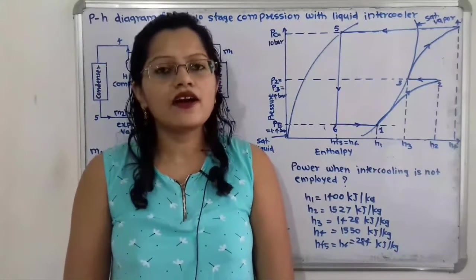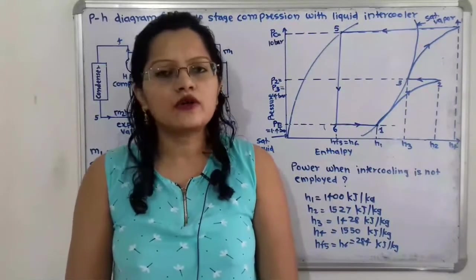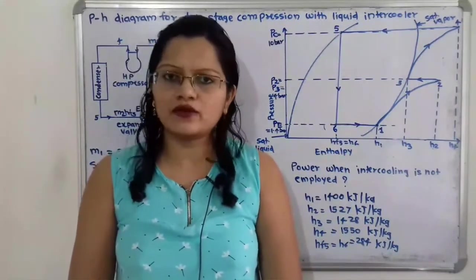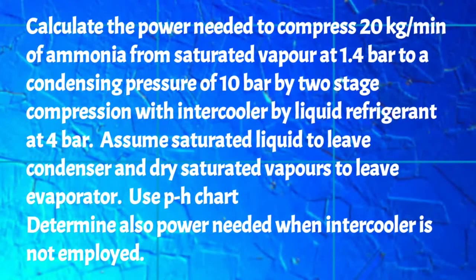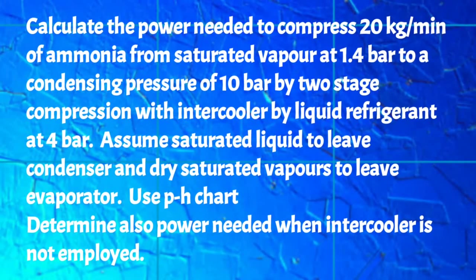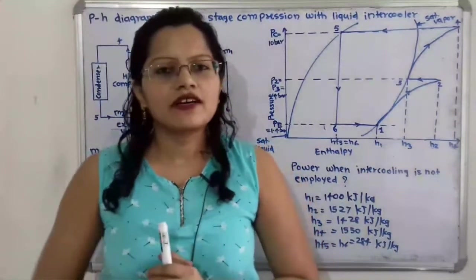Hello friends, this is Priyanka. Today we are going to solve a problem on two-stage compression with liquid intercooler system. The problem: calculate the power needed to compress 20 kilograms per minute of ammonia from saturated vapor at 1.4 bar to a condensing pressure of 10 bar by two-stage compression with intercooling by liquid refrigerant at 4 bar. Assume saturated liquid leaving the condenser and dry saturated vapor leaving the evaporator. Use the p-H chart. Also determine the power needed when intercooling is not employed.